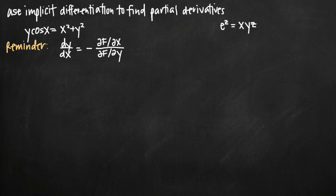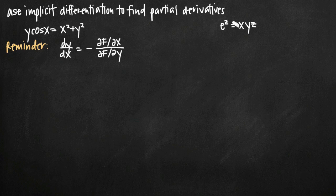Today we're going to be talking about how to use implicit differentiation to find partial derivatives of multivariable functions. We're going to be doing two different problems: y cosine of x equals x squared plus y squared, which has two variables x and y, and e to the z equals xyz, which has three variables. The process for finding partial derivatives will be slightly different because of this distinction.